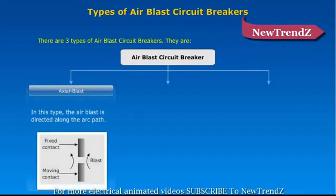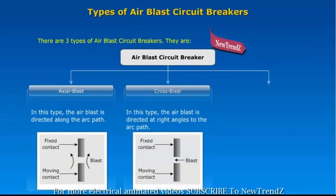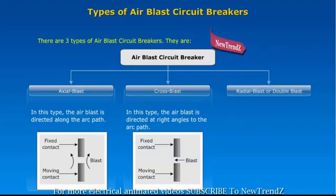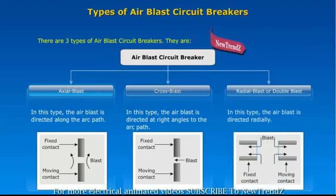In the axial blast type, the air blast is directed along the arc path. In the cross blast type, the air blast is directed at right angles to the arc path. In the radial blast or double blast type, the air blast is directed radially.